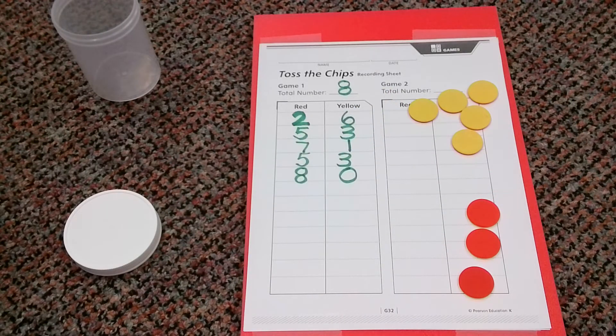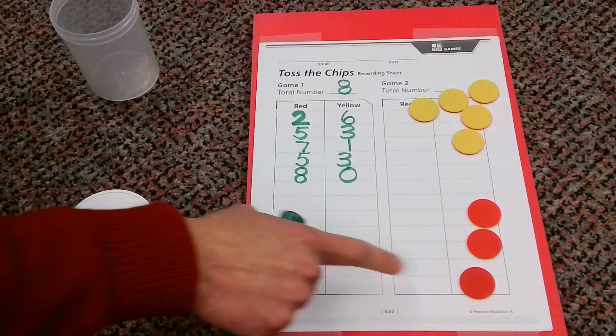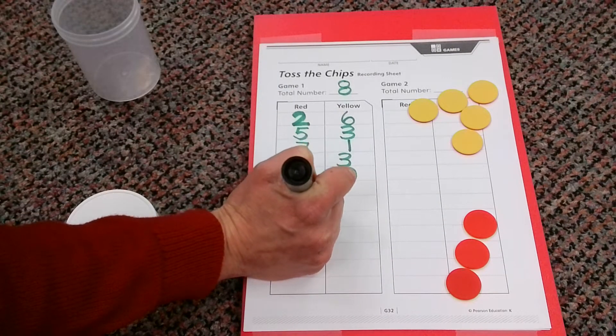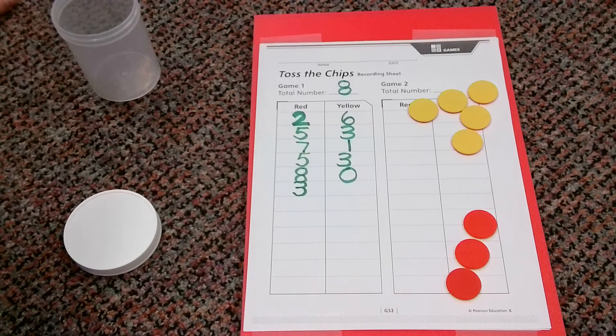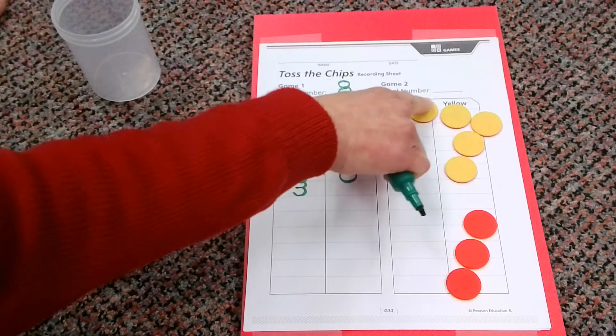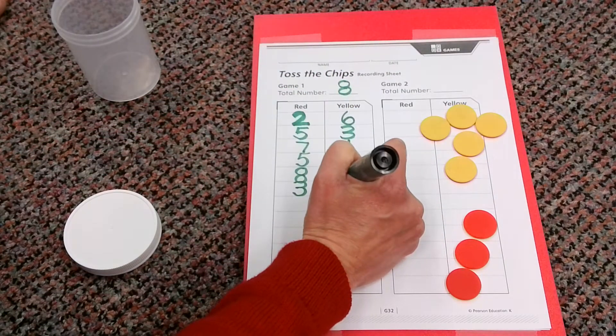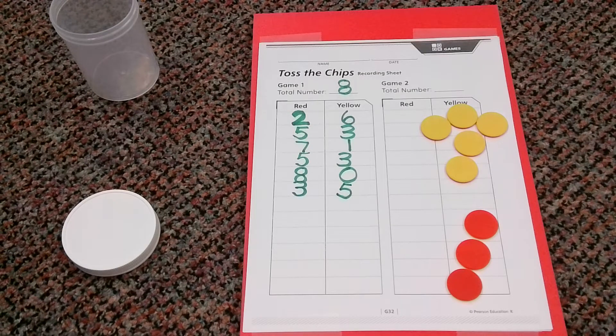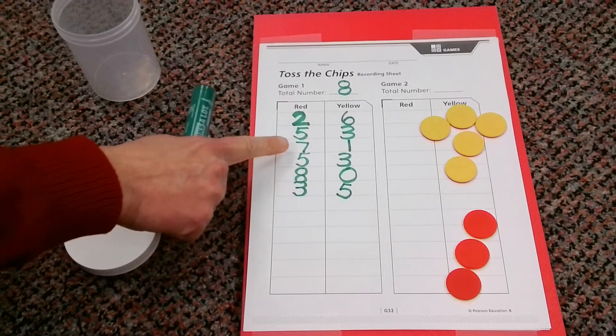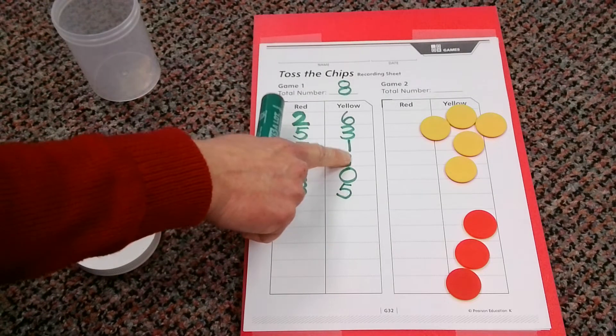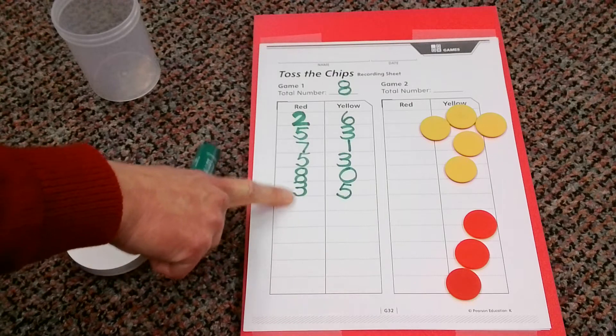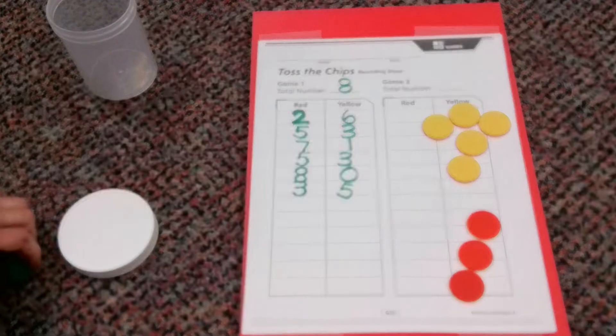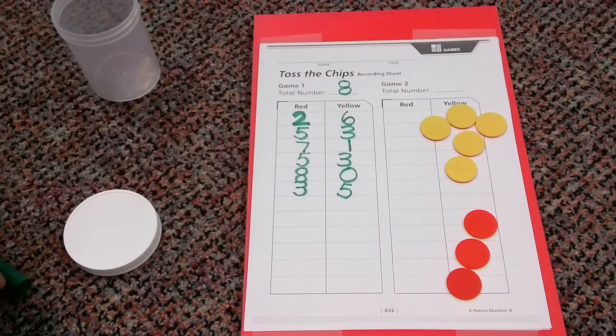Okay, let's take a look here. We have one, two, three red. Let's count our yellows. One, two, three, four, five. Which is interesting. I wonder if we have already seen this. Because we had five red, three yellow. Look, it did a switcheroo to three red and five yellow. Still equals eight. We call them flip-flop or turnaround facts.